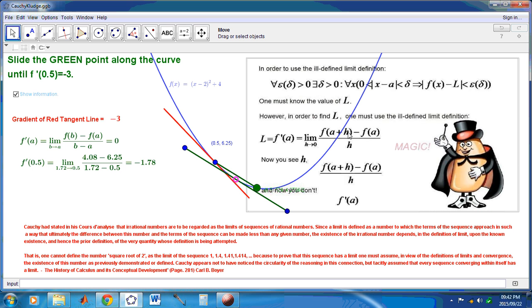Okay, as you see over here, L is equal to the first derivative at A. And so, this is really why the mainstream definition of derivative is flawed.